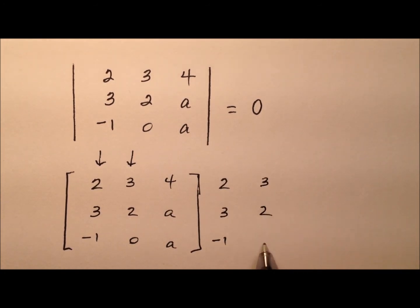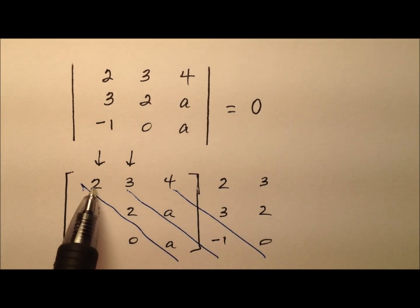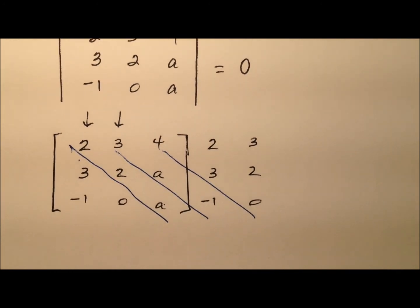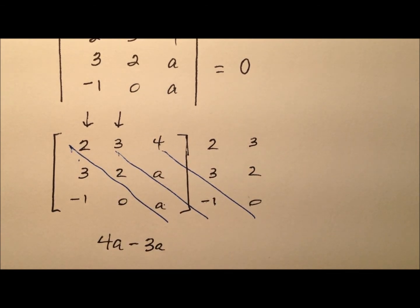and then I'm going to do a series of multiplications. We're going to come down the main diagonals and multiply all these terms. So 2 times 2 times A is 4A. Then 3 times A times negative 1 is negative 3A. And then 4 times 3 times 0, that's just 0.